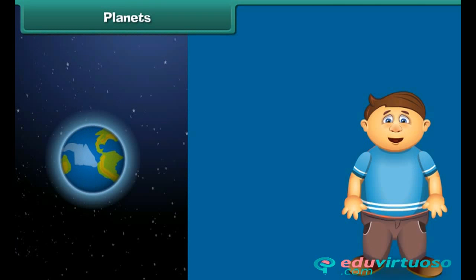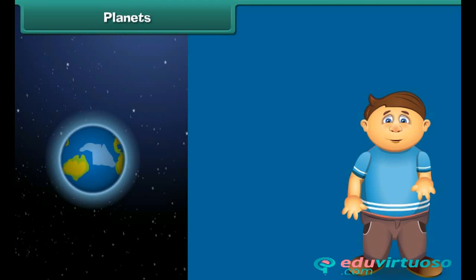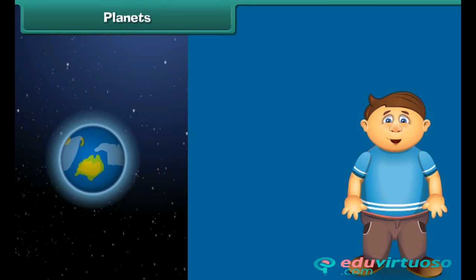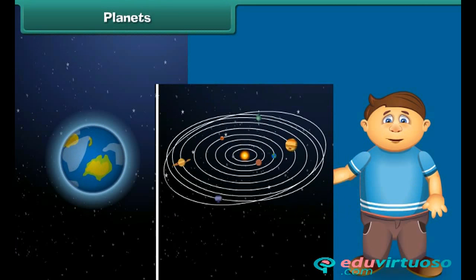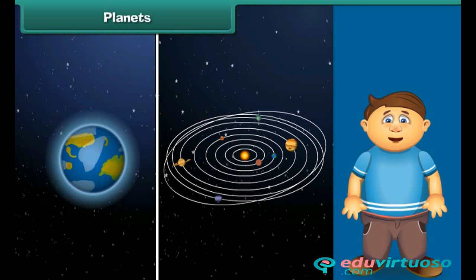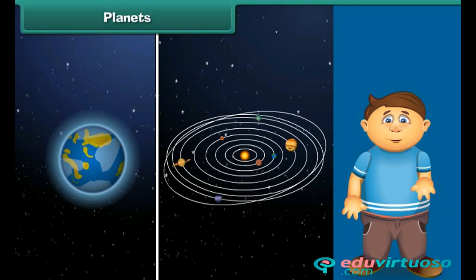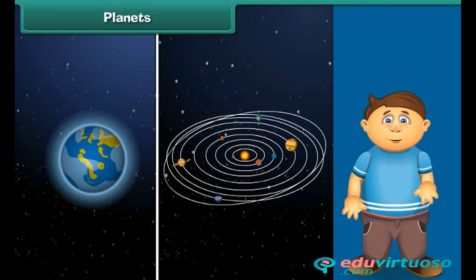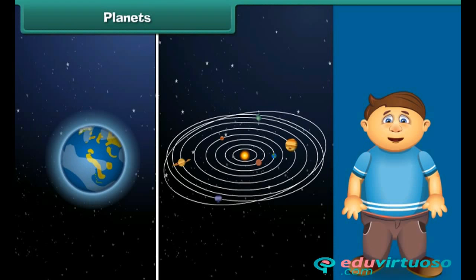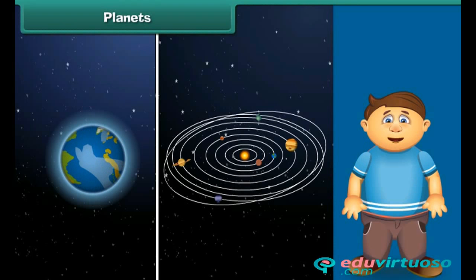Do you know the fact that life is possible on planet Earth only because of the presence of water and oxygen? On other planets there is no clue of the presence of oxygen and water. Apart from this, the extreme temperature is also not suitable for the existence of life on other planets.